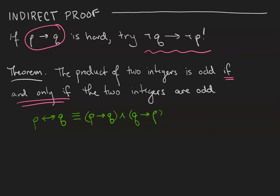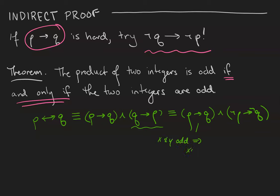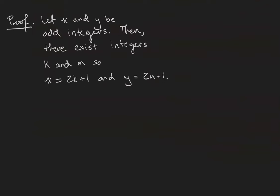It's going to be hard to prove 'if q then p' directly — go ahead and try it yourself, you're going to run into some trouble. So we're going to swap 'if q then p' for 'if not p then not q.' We're going to prove x and y are odd makes xy odd — that's our forward direction — and we're going to prove that if x and y are not odd, aka even, then xy is not going to be odd either. That's our proof strategy.